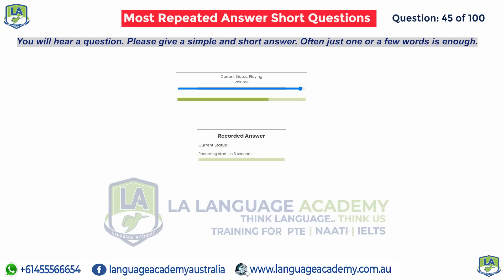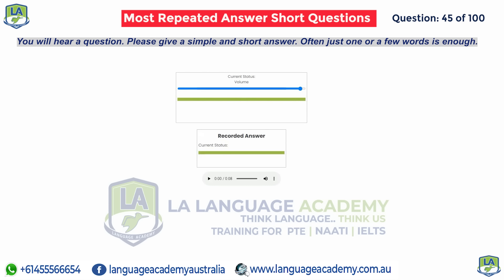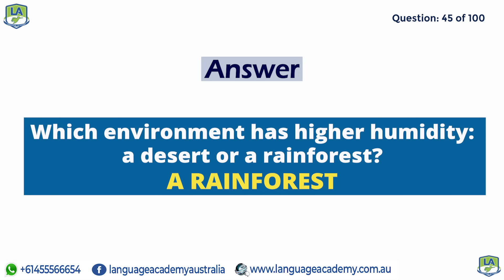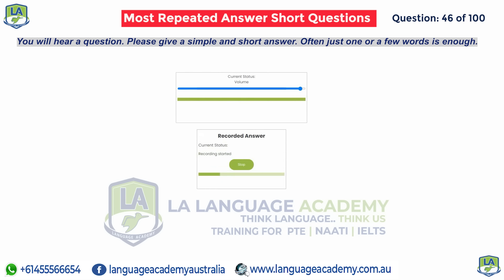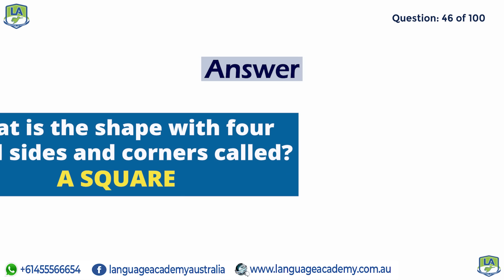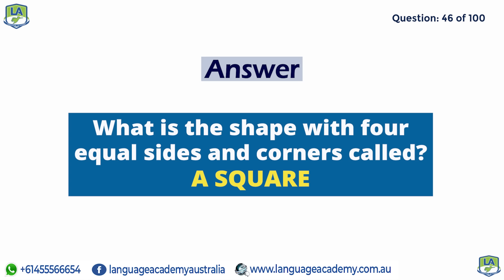Which environment has higher humidity, a desert or a rainforest? A rainforest. What is the shape with four equal sides and corners called? A square.